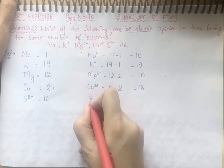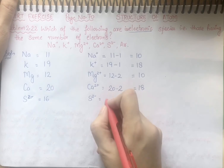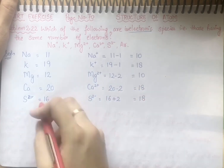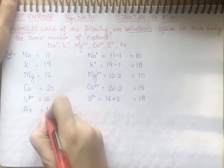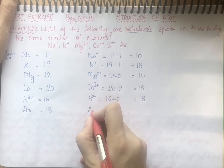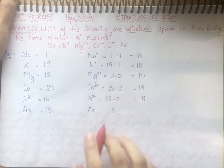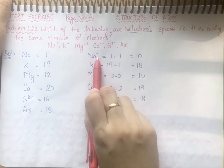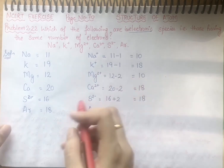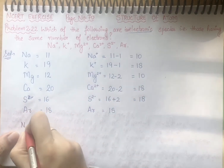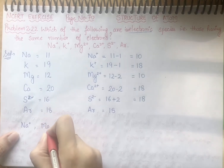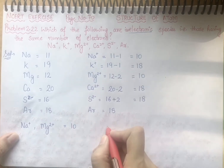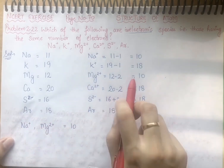S (sulfur) का atomic number 16 होता है। S²⁻ का मतलब है कि इसने 2 electrons gain की हैं: 16 plus 2 equal to 18. Argon का atomic number 18 होता है, neutral atom है तो Ar में 18 electrons present हैं। अब same number of electrons कौन-कौन से case में आ रहे हैं: Na⁺ और Mg²⁺ दोनों में 10 electrons हैं।